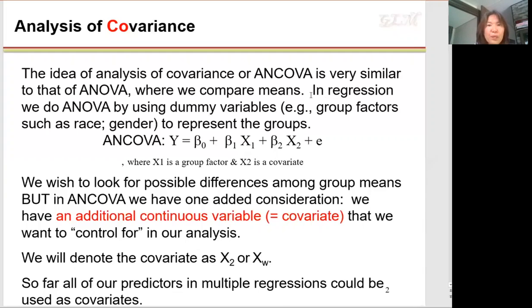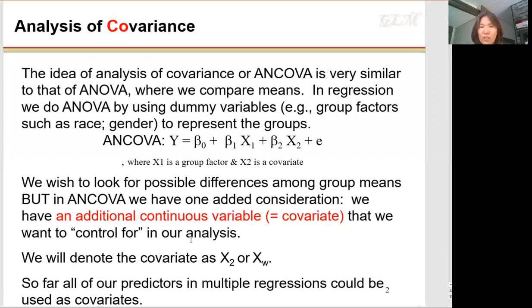In regression, we do ANOVA by using dummy variables — group vectors such as race and gender — to represent the groups. In addition to this group vector, you add one more covariate X variable. We wish to look for possible differences among group means, but in ANCOVA we have an added consideration: an additional continuous variable that we want to control for in our analysis.